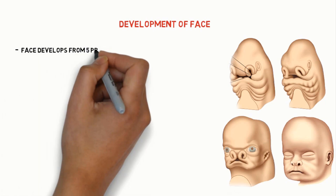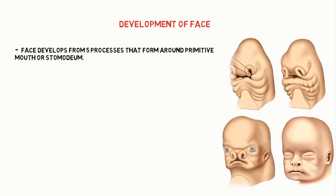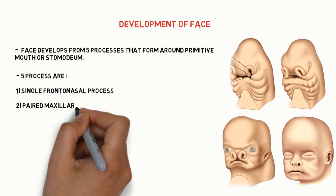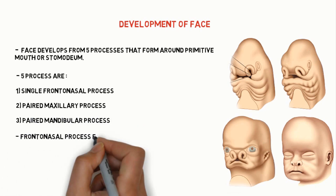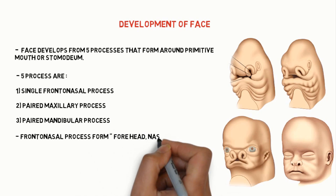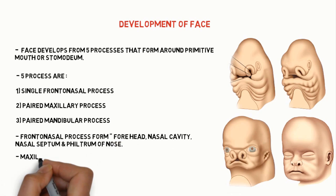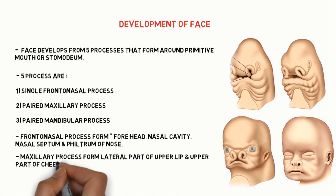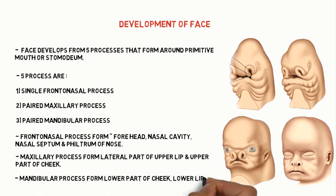The face develops from the five processes that form around the primitive mouth or stomodeum. These five processes are: single frontal nasal process, two paired maxillary processes, and paired mandibular processes. The frontal nasal process forms the forehead, nasal cavity, nasal septum, and philtrum of the nose. The maxillary process forms the later part of the upper lip and upper part of the cheek. The mandibular process forms the lower part of the cheek, lower lip, and chin.